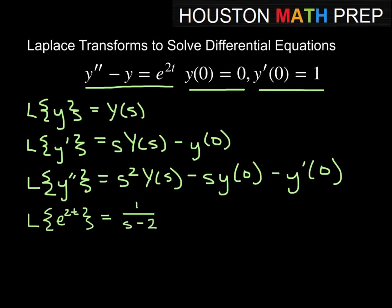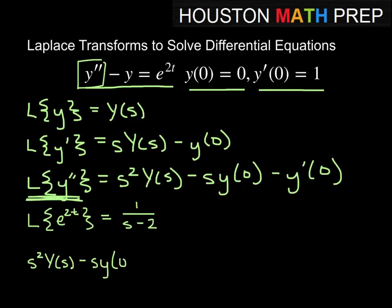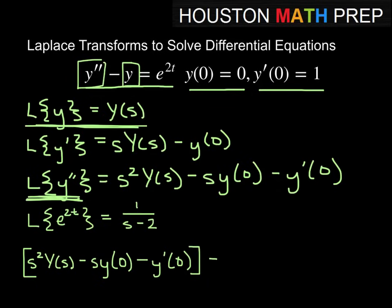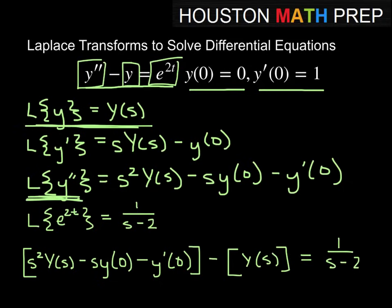You can work that out using the definition, or look it up on a chart. So our equation becomes: the Laplace transform of y double prime gives us s squared Y of s minus s times y of 0 minus y prime of 0. That's the y double prime term, minus y, and the Laplace transform of y is just Y of s, equal to 1 over s minus 2.